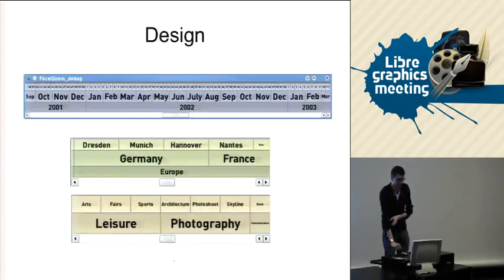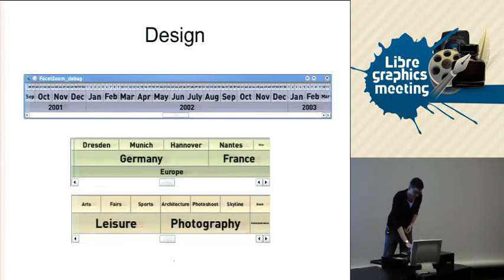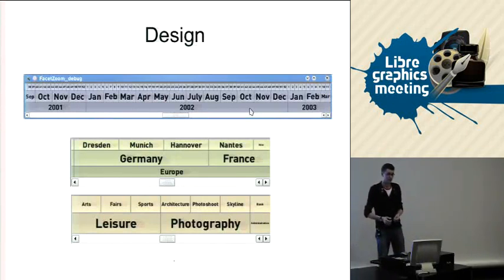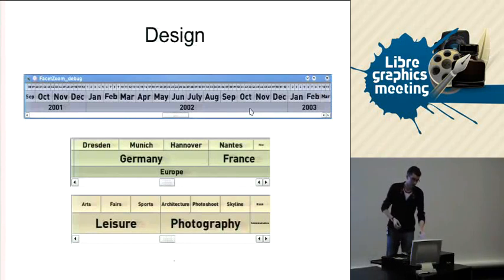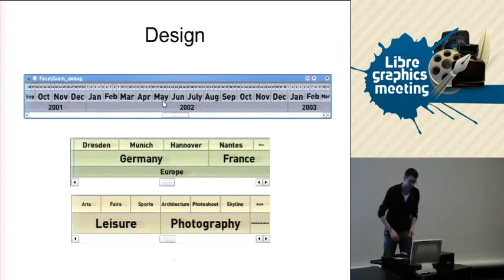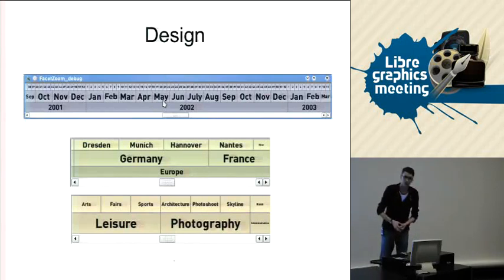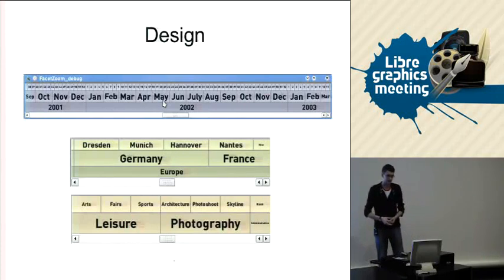The design that was developed for that widget is that it will show that hierarchy. At the top you can see a FacetZoom widget that has been instantiated with temporal metadata. So we have years at the bottom row, we have months one row higher, and then you can see — it's a bit small here — there's a list of weeks that constitute those years.